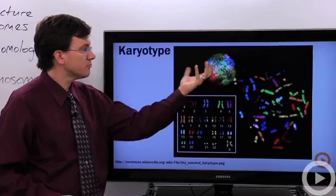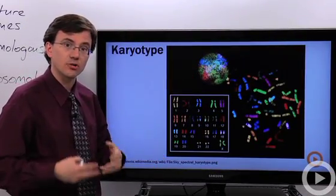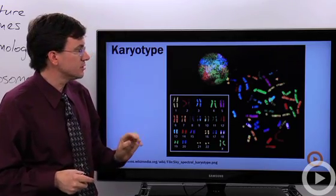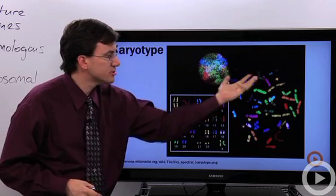Here we see a nucleus and what they've done is they've used various stains and colors to help spot different parts of the different chromosomes. And now this is what the chromosomes would look like.